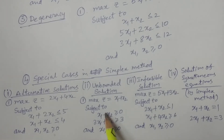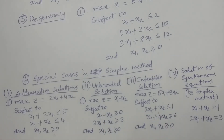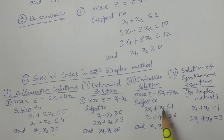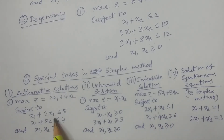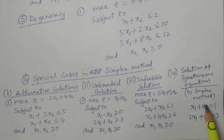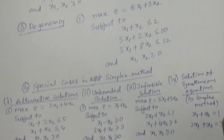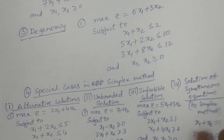These special cases in simplex — unbounded, infeasible, alternative solution, and solution of simultaneous equations — are important. Unbounded and infeasible may not seem like separate topics, but we treat them as special cases. That concludes Unit 3.